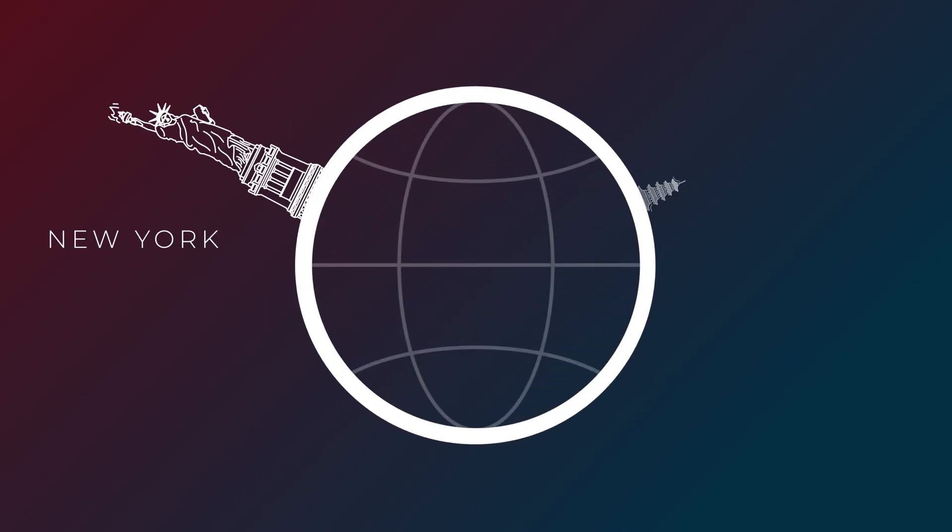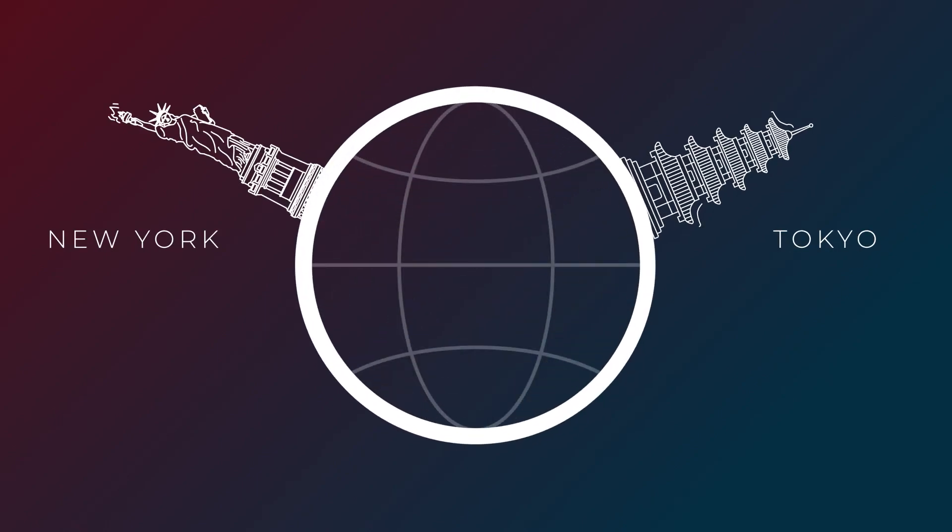Imagine trying to get a message from New York to Tokyo. Traditionally, signals would have to travel through cables along the Earth's surface. But neutrinos could happily travel in a straight line, directly through the Earth. No tunnel or cable required.